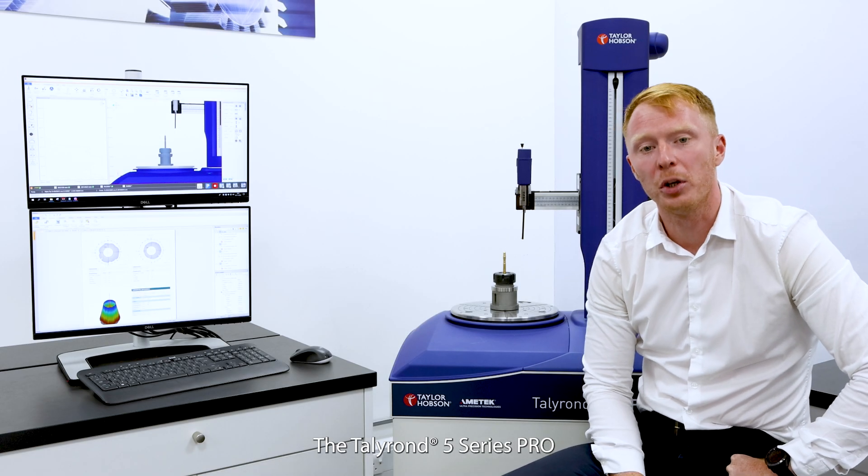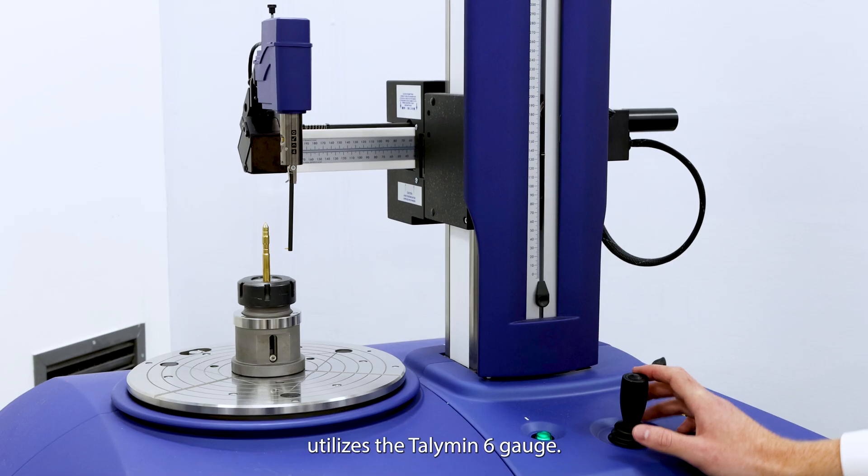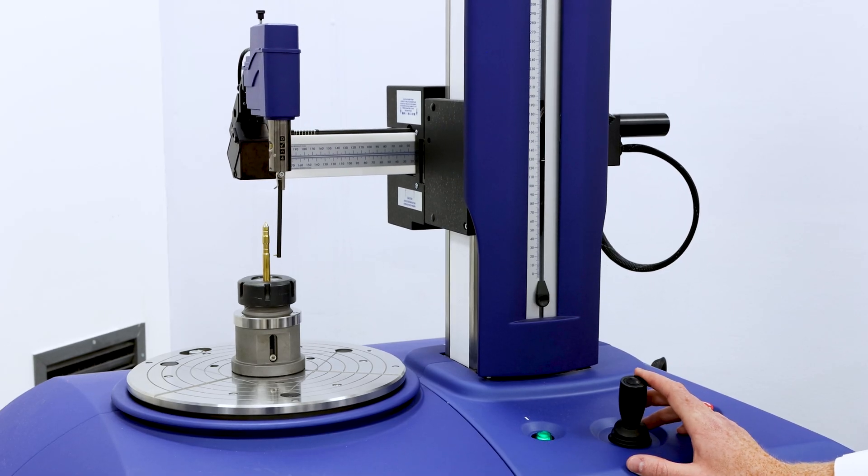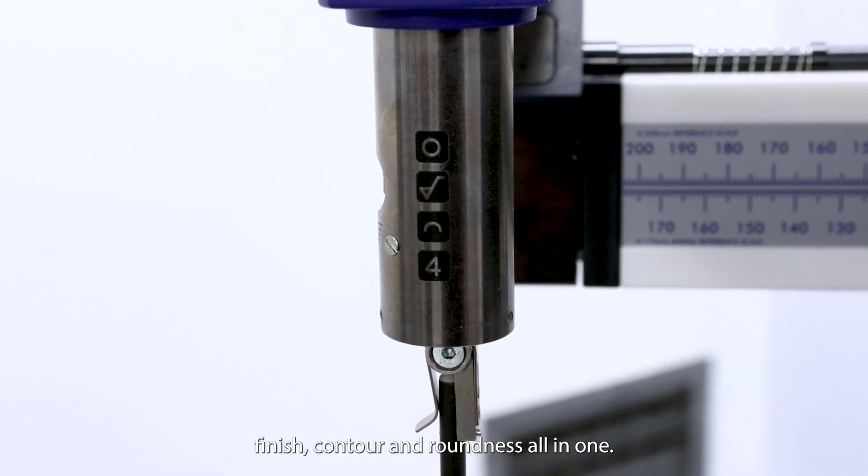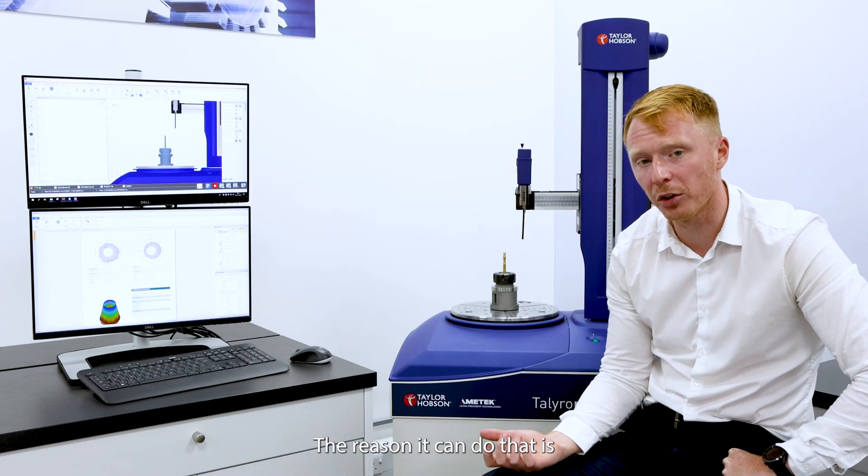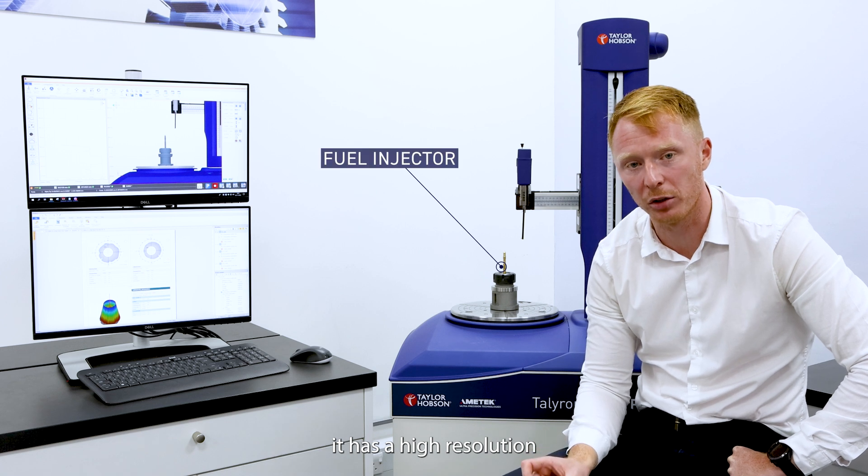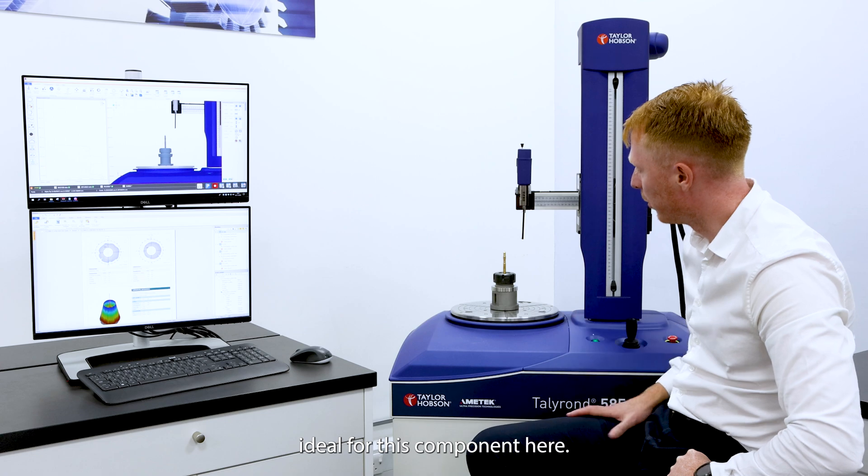The Teleron 5 Series Pro utilizes the Teleron 6 gauge. This can do surface finish, contour, and roundness all in one. The reason it can do that is it has a high resolution and a large 4mm gauge range, ideal for this component here.